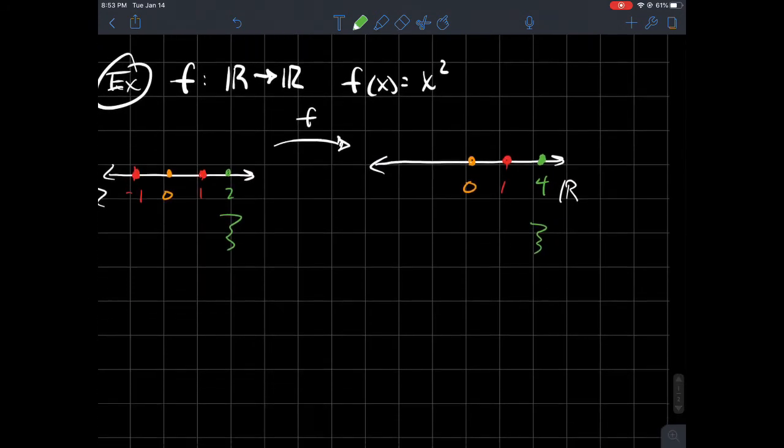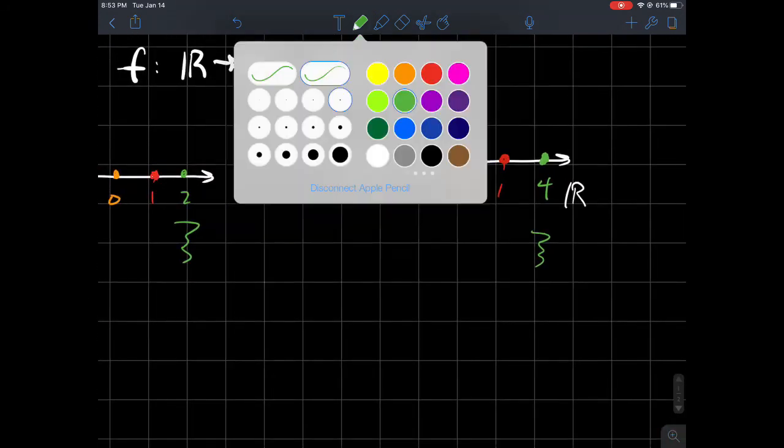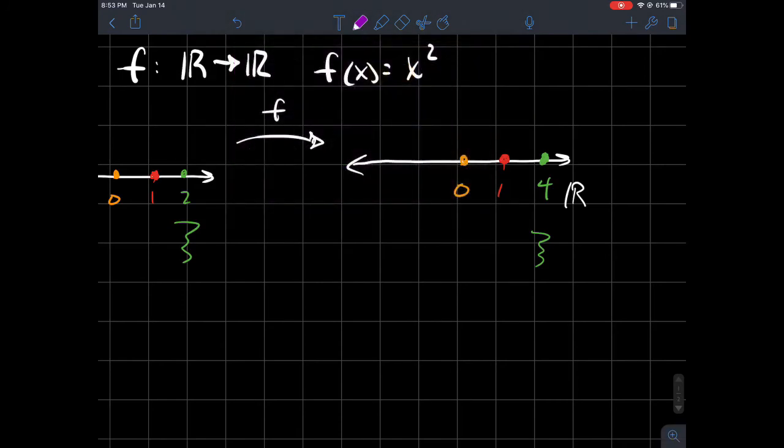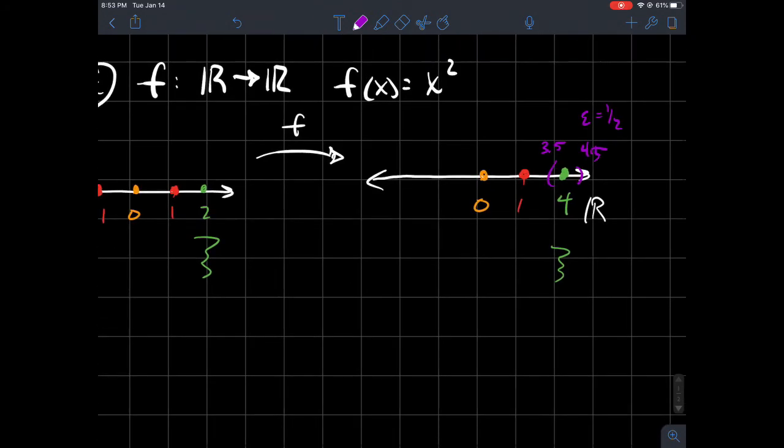What this definition says again is for any window of radius epsilon you put around the output four. In my case let's just randomly pick one. Let's say that I put a window around four of radius one half, so I'm looking at the interval from 3.5 to 4.5, and epsilon is equal to one half. What I should be able to do is go back here in the domain and find a window around the input two.